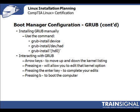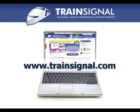Grub will probably be installed by default, but to install it manually, use the command 'grub-install /dev/hda', which will install Grub into the master boot record of your first hard drive. You can make Grub edits in the configuration file or on the fly. When you boot up and the Grub menu appears, use your arrow keys to move up and down the kernel listings, and pressing E will allow you to edit that kernel option. Thanks for watching. For more information regarding our training, please visit www.train-signal.com.